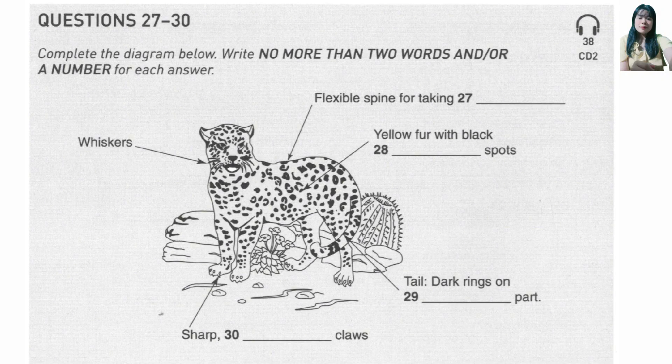Yes, that's fine, but be careful. The jaguar is usually thought of as nocturnal, but strictly speaking, it's crepuscular — in other words, most active between dusk and dawn. But as long as you mention this, you can put it under the umbrella of nocturnal. Is that all? Yes, I think so. Thanks, Professor.